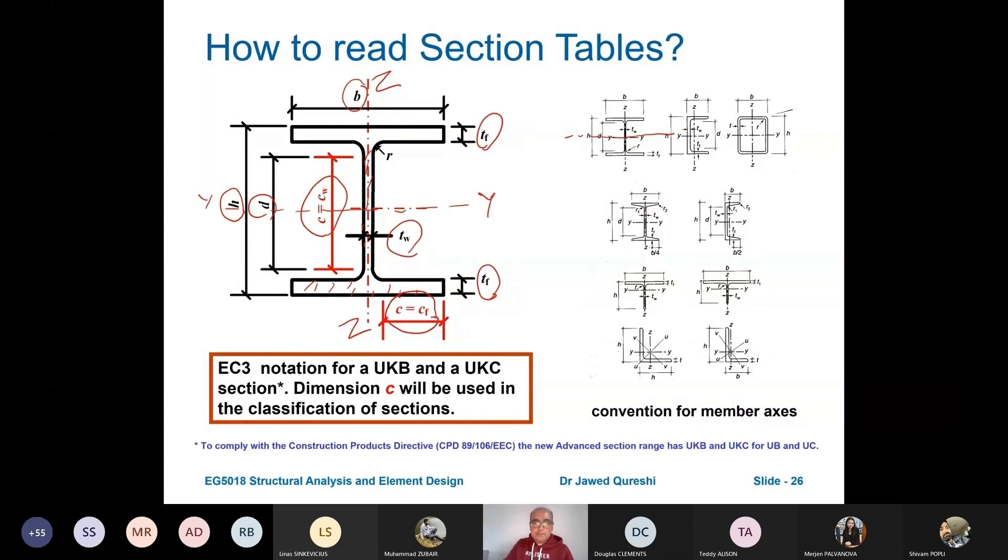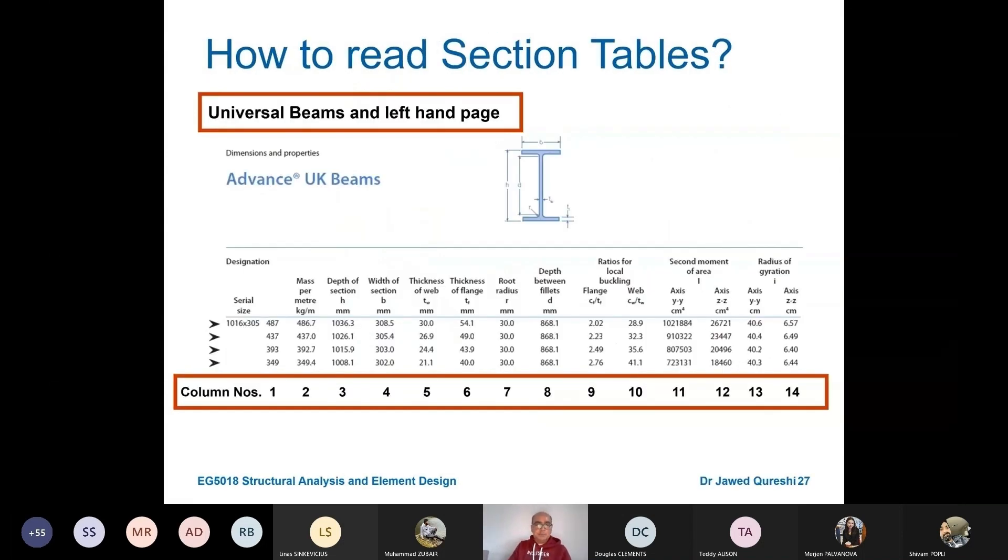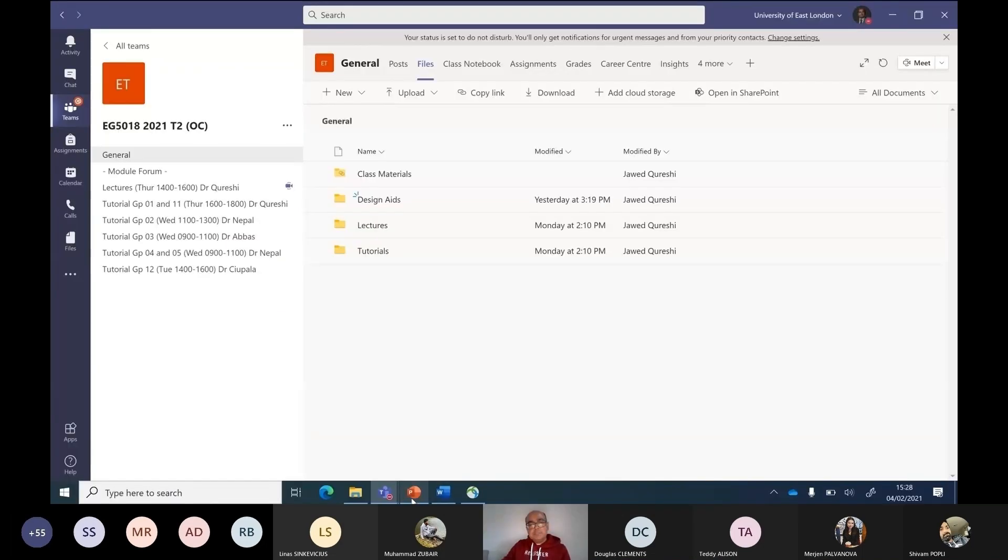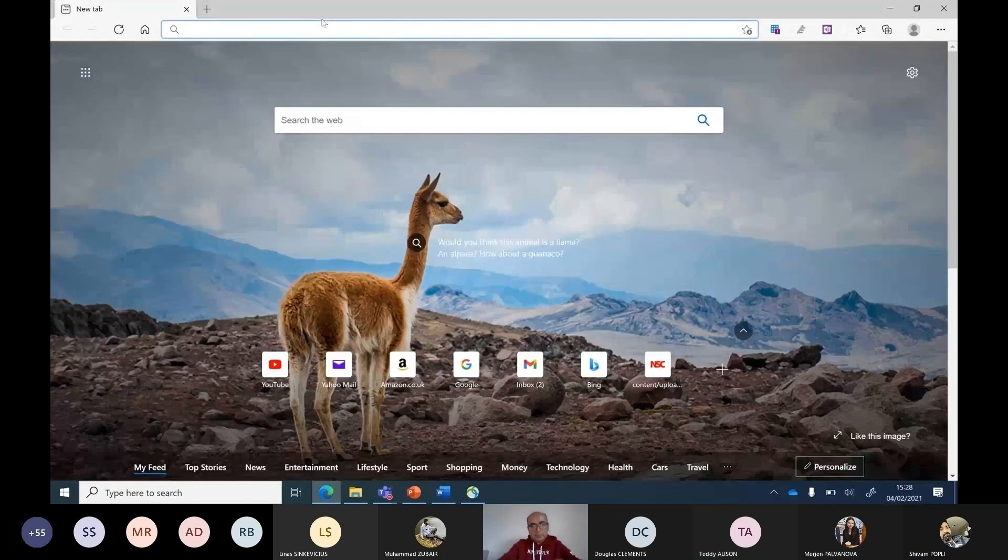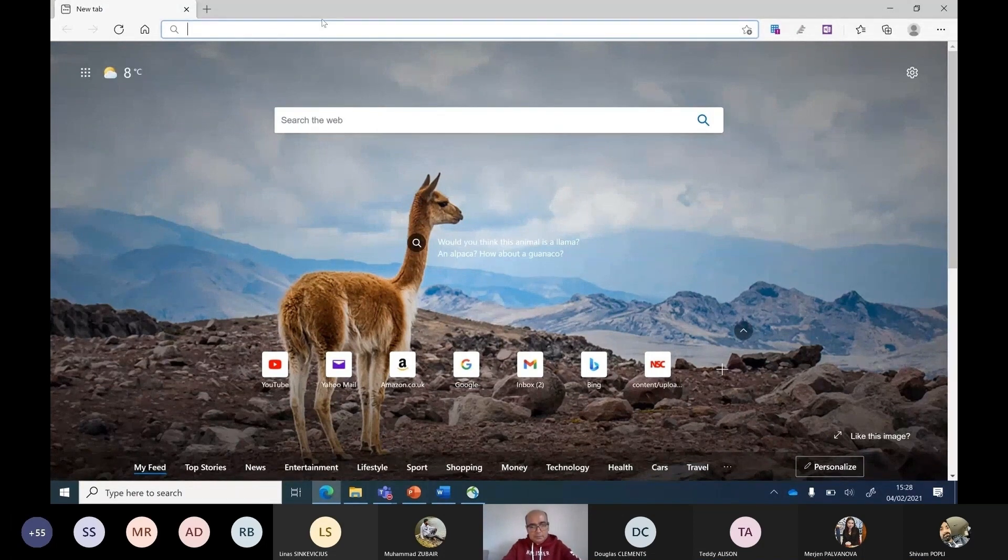For a particular section, where do we get this information from? We get this information from section tables. For using section tables, we have another online section table that I normally tend to use if I'm not in the exam situation. Just type in steel for life.